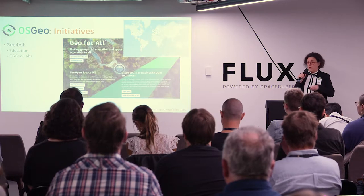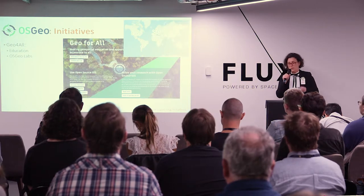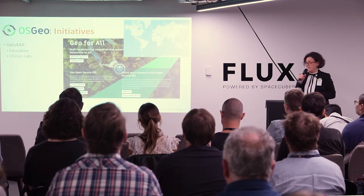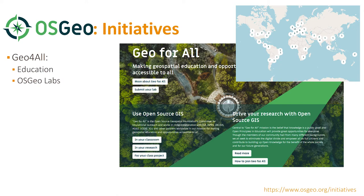GEO for All operates a network of so-called OSGEO labs. You can see their distribution on a map — it's not a huge number but there are quite a lot of them. The idea is to set up a lab where purely OSGEO tools are used in developing projects, and labs can then register themselves on the map.